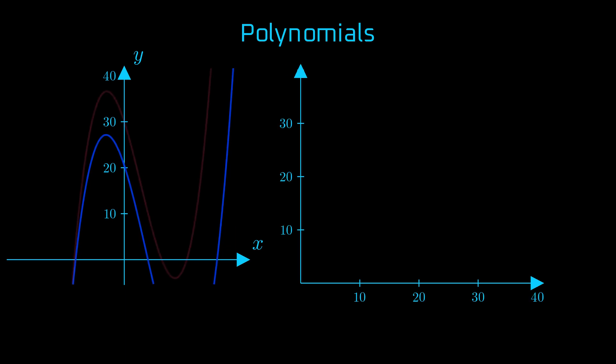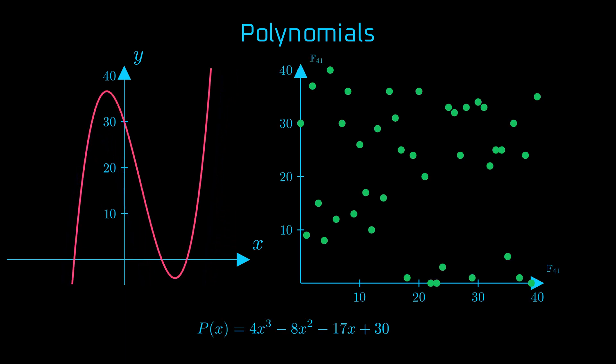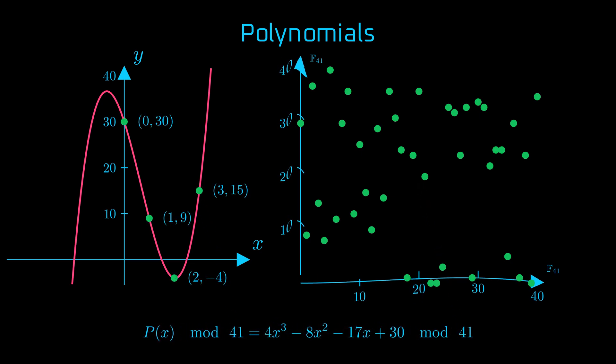Of course, in cryptography, we work in finite fields, particularly prime fields fp, where p is a prime number. In this context, all operations on the polynomial's values are done modulo p. Modulo operations are done here on integers, so let us see how it's constructed in the field f41.